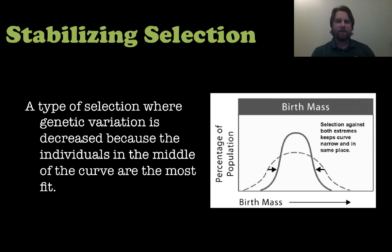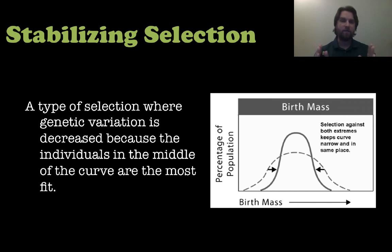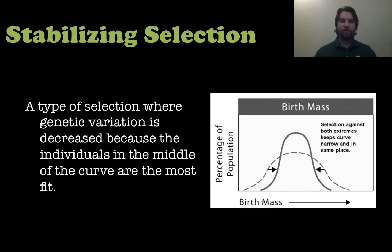Stabilizing selection is when genetic variation is decreased because the individuals in the middle of the curve are the most fit. The edges, or extremes, pare down and you don't see as many of those. A great example in humans is birth mass — there is selection against really extreme birth masses, very low-weight and very high-weight babies. The selection for babies right in the middle is a 'just right' situation, giving you a tall bell curve where the extremes on each side are selected against.